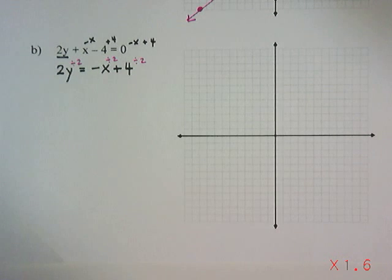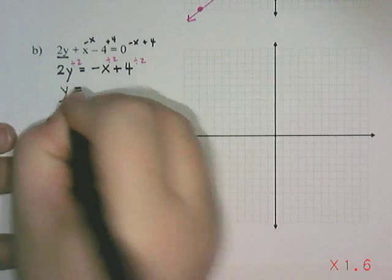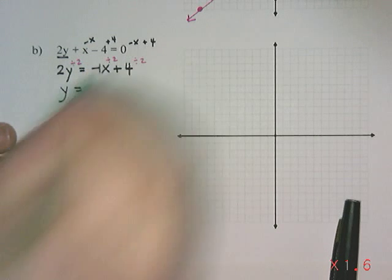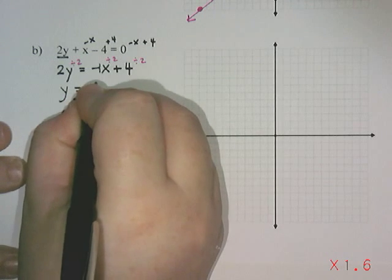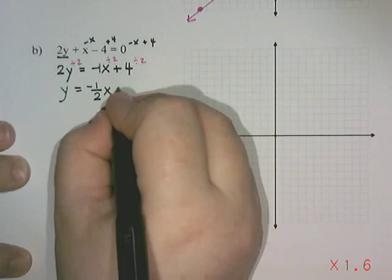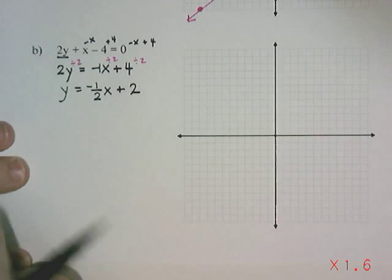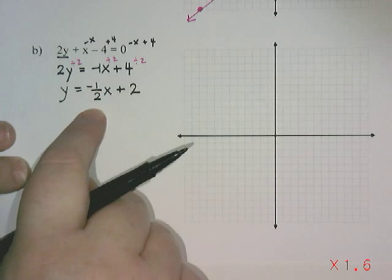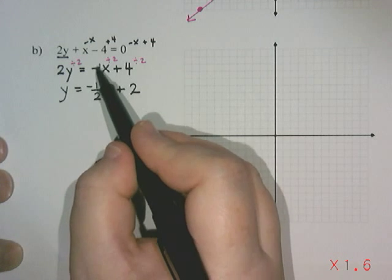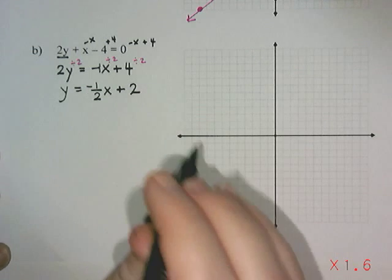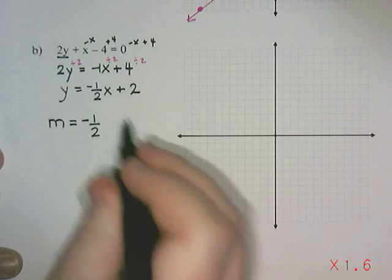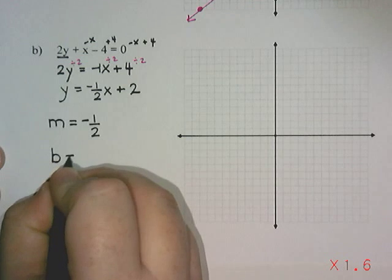So 2 divided by 2 is 1y, or just y. Negative x divided by 2. Secretly in front of that negative x, there's a 1 hiding there. There's a little negative 1. So this is going to become negative 1 divided by 2x. And then 4 divided by 2 is 2. So the equation of our line in slope y-intercept form is negative 1 over 2x plus 2. My slope is negative 1 half, and the negative always goes with the numerator. And my y-intercept is positive 2.